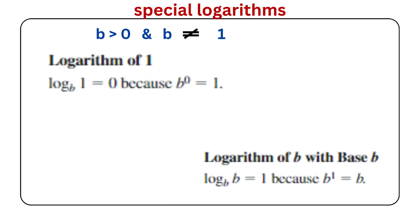Two special logarithm values you should learn. Let b be a positive real number such that b is not equal to 1. Log of 1 to base b equals 0, because b to the power 0 equals 1. Log of b to base b equals 1, because b to the power 1 equals b.